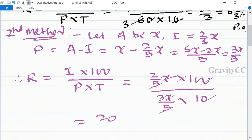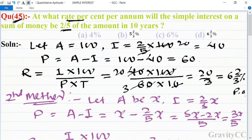So it is equal to 20 upon 3, which is equal to 6 and 2/3 percent per annum, which is the required answer. So option D is the correct answer.